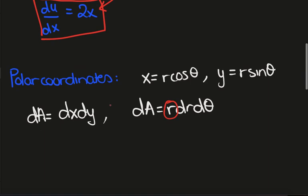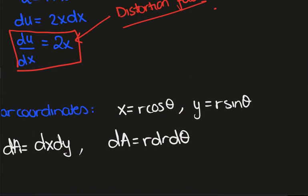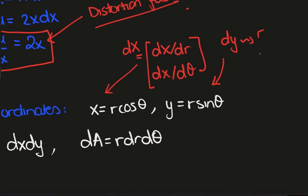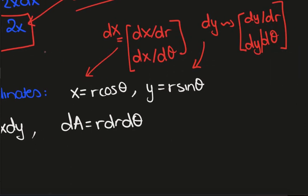Let's see why this distortion factor occurs. In higher dimensions we need to figure out what the derivative is, because we have two variables. So dx can be thought of as ∂x/∂r and ∂x/∂θ when we change variables, and dy gives us the same thing — ∂y/∂r and ∂y/∂θ. The distortion factor, which should be a scalar, is given by the determinant of this matrix.